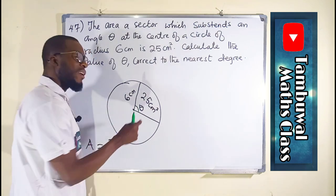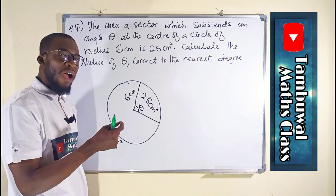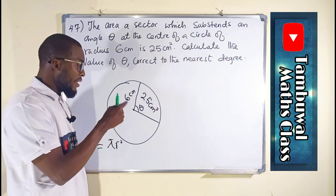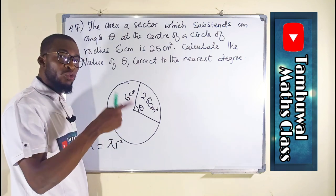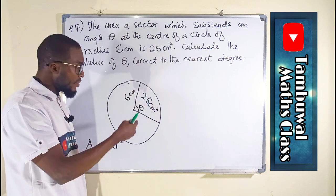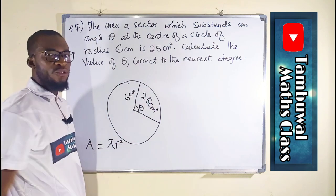So to find the area of that sector, it is going to be the angle subtended by that sector out of the total angle of a circle which is 360 degrees times pi r squared.